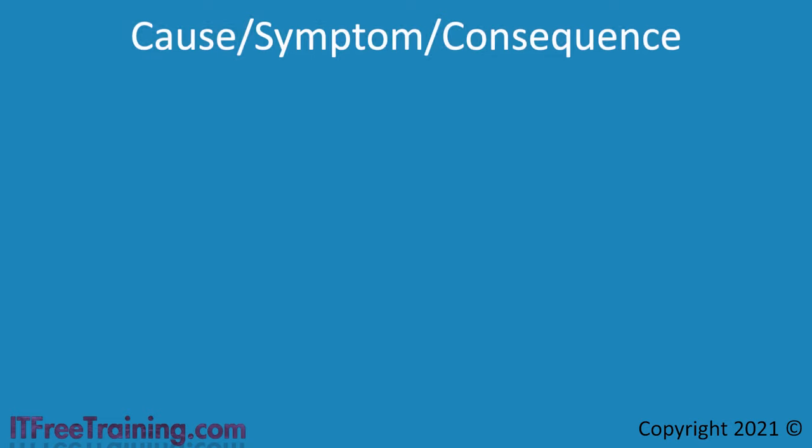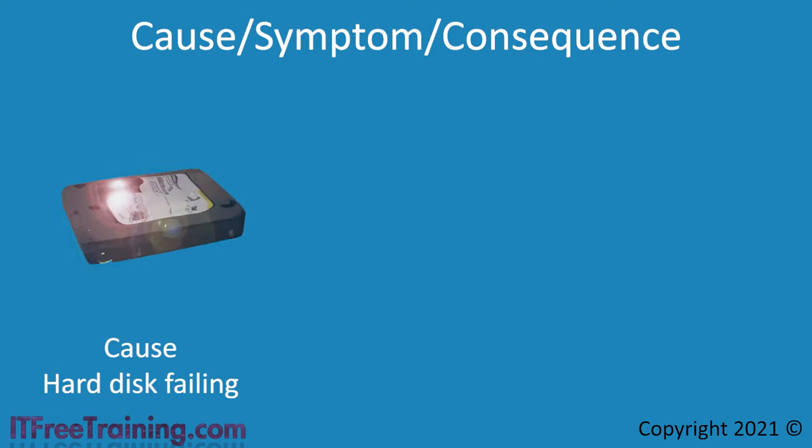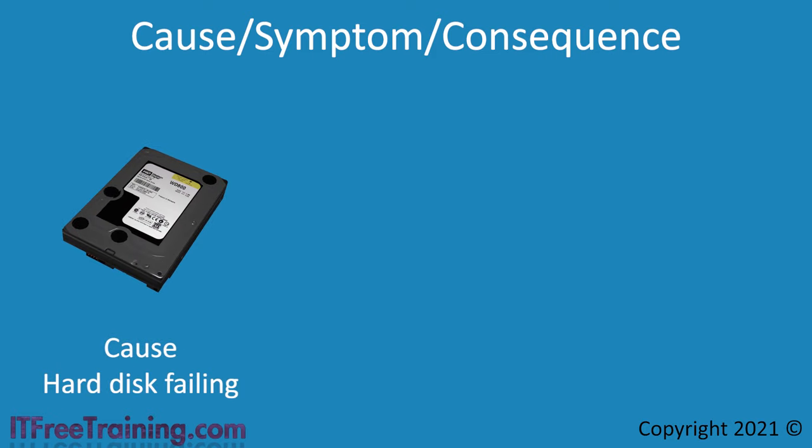There are many different ways to troubleshoot computer problems — one may work better in some cases, others in different cases. Generally, when a problem occurs, there is something that caused it. In this example, we'll consider that the hard disk is failing and sometimes not reading and writing data correctly. In computers, there is generally only one thing causing the problem, and it is a matter of treating it like a logical problem to find the cause, fix it or replace it, and the problem goes away. In some cases there will be multiple causes, but this is rare.